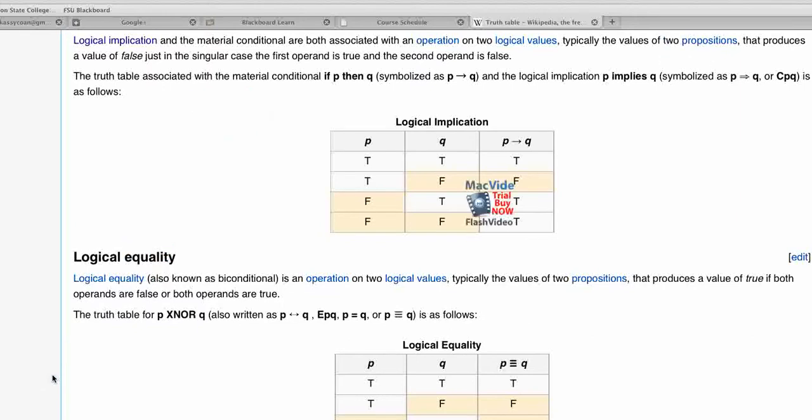So here we have the table that just tells us which situations are true and which ones are false. The first two, those came pretty naturally to me. True implies true is true. True implies false is false.